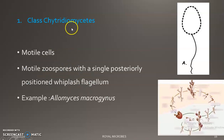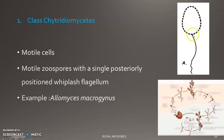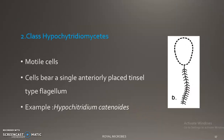Class Chytridiomycetes includes mainly motile cells — motile zoospores — with a single posteriorly placed whiplash flagellum. The posterior end has a whiplash flagellum extending downwards. An example is Allomyces macrogynus. A simple diagram showing the life cycle of Allomyces macrogynus is also shown.